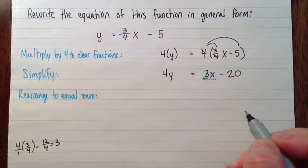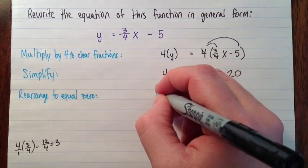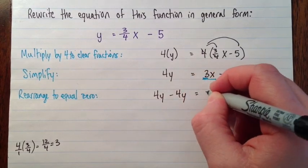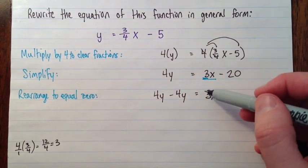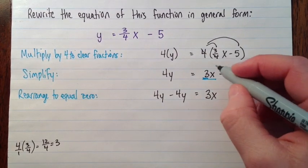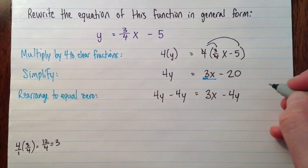So I'm going to move everything onto the right side. So I'll just subtract 4y from both sides. And I know I want it to be the x term, and then the y term, and then the constant term. So I'll put my negative 4y right in the middle here.